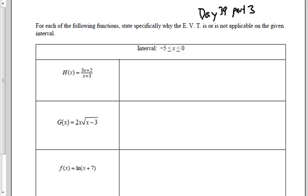They give us the interval to be from negative 5 to 0. I look, rational function. I know that there's going to be a vertical asymptote when x equals negative 3, and therefore it's not continuous. Is x equals negative 3 within that interval? Yes, it is. So let's come up with our conclusion.